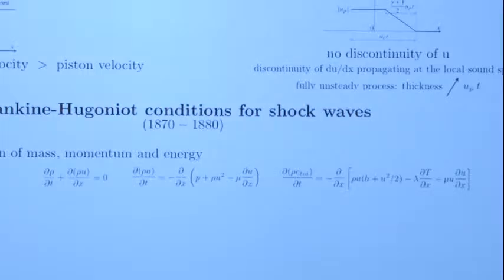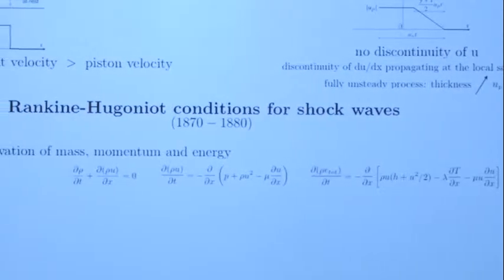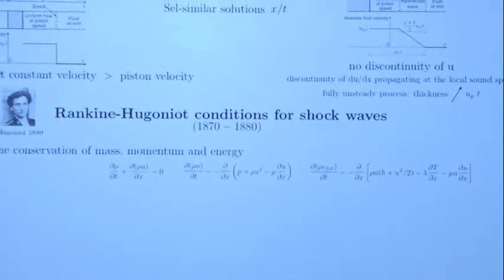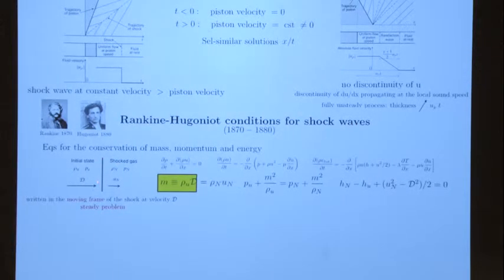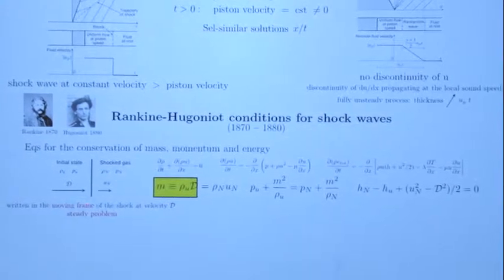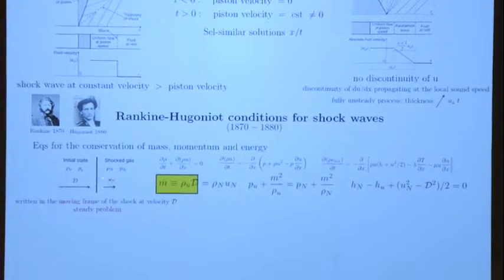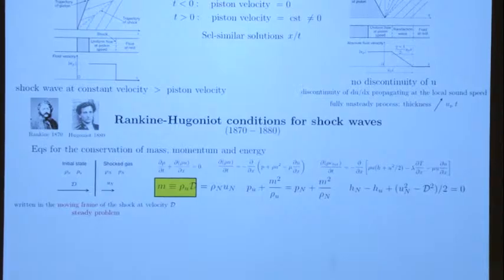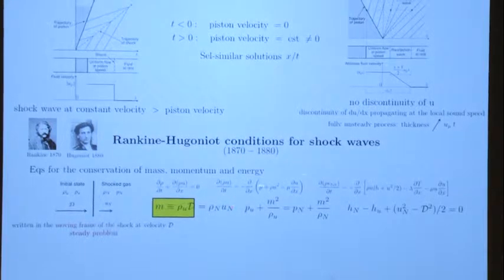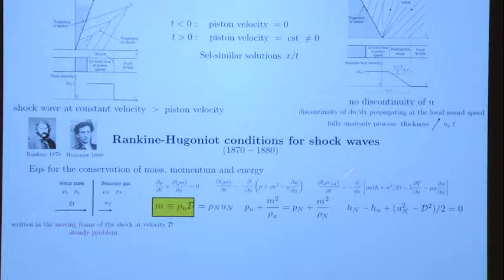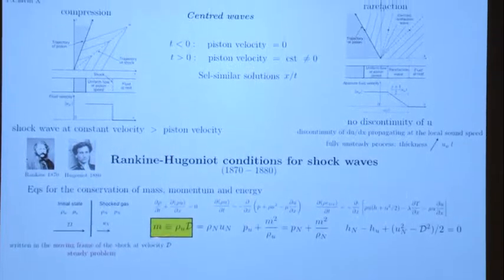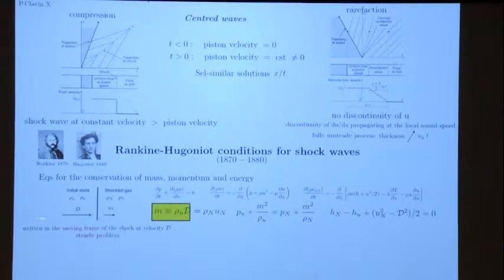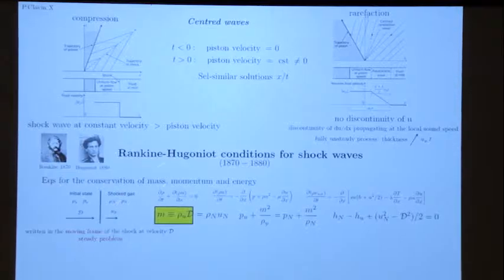Why are these forms interesting to the problem of the jump? It's easy to understand: when you work in a frame attached to the moving shock, you have a steady-state problem. So when you are in steady state, all the terms d/dt disappear. Now, the distance x is the distance in the frame moving with the shock — it is a steady frame.